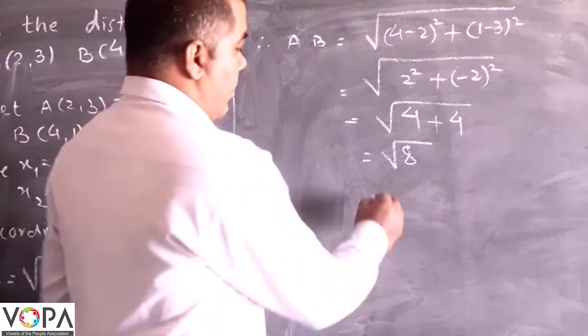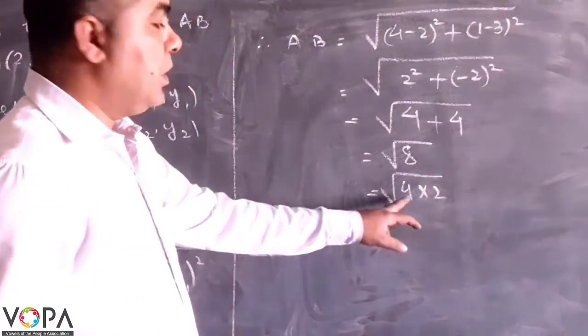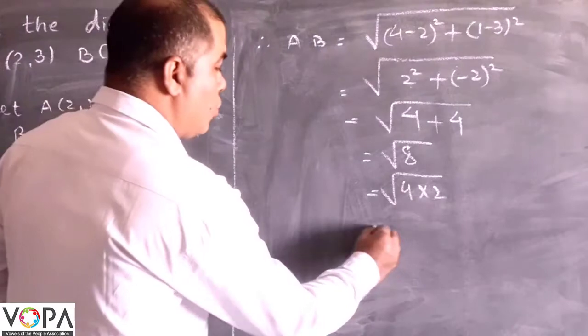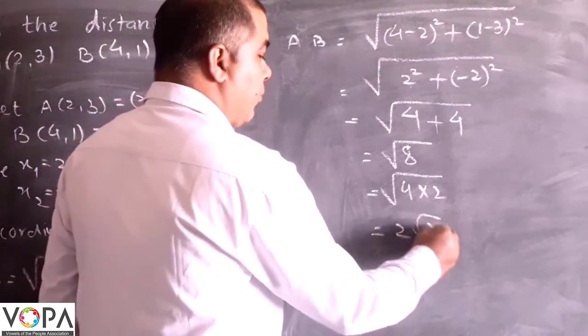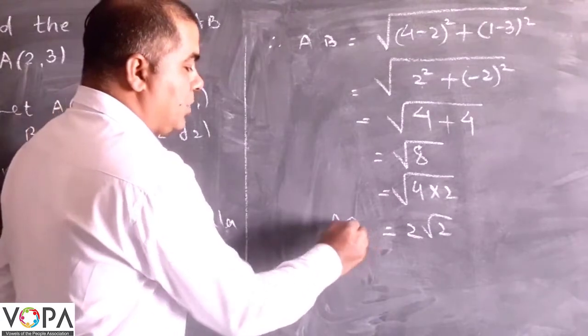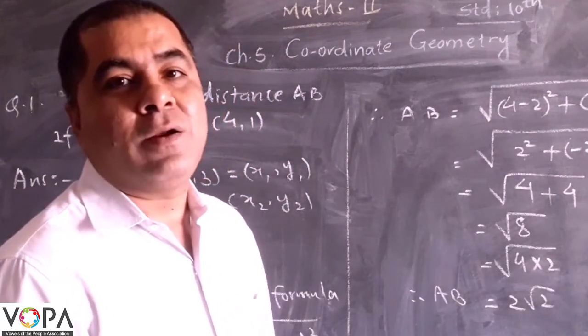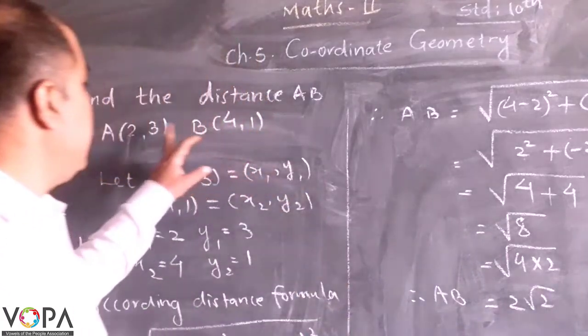The square root of 4 is 2 and square root of 2 will remain as it is. Here AB is equals to 2 root 2, which is the distance between points A and B.